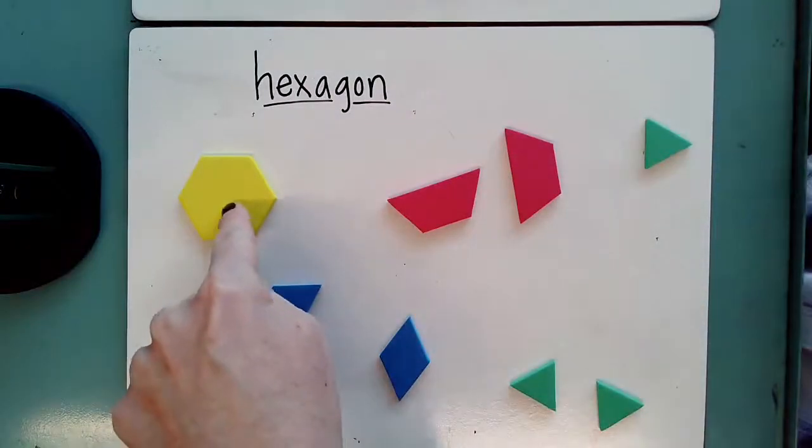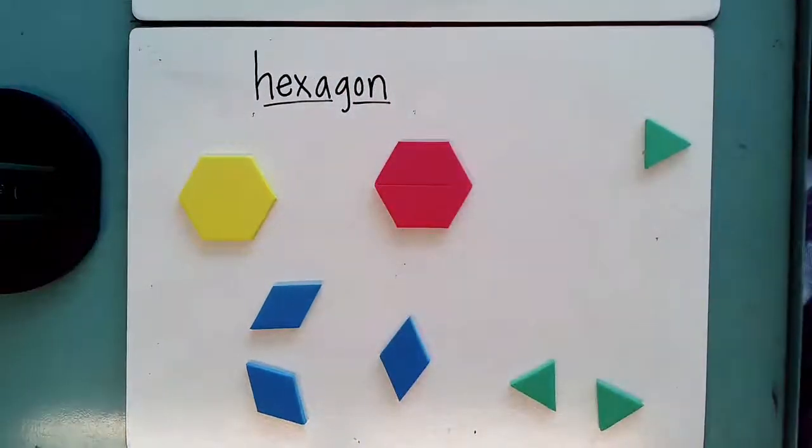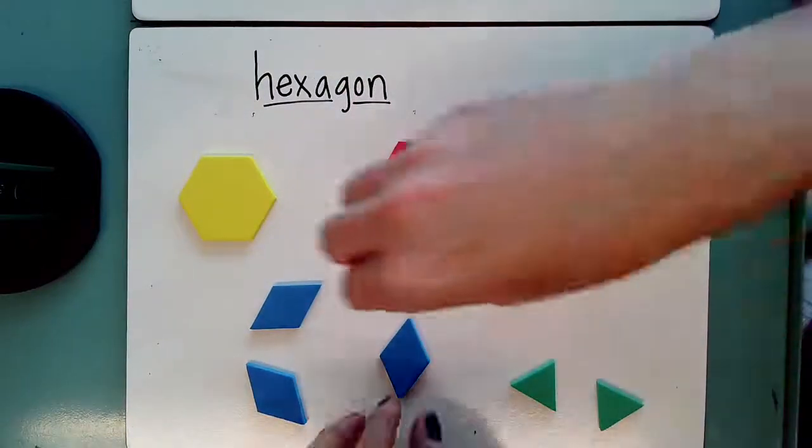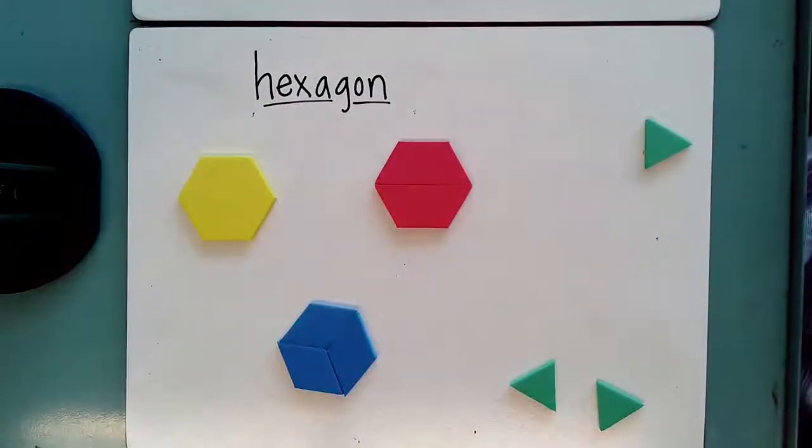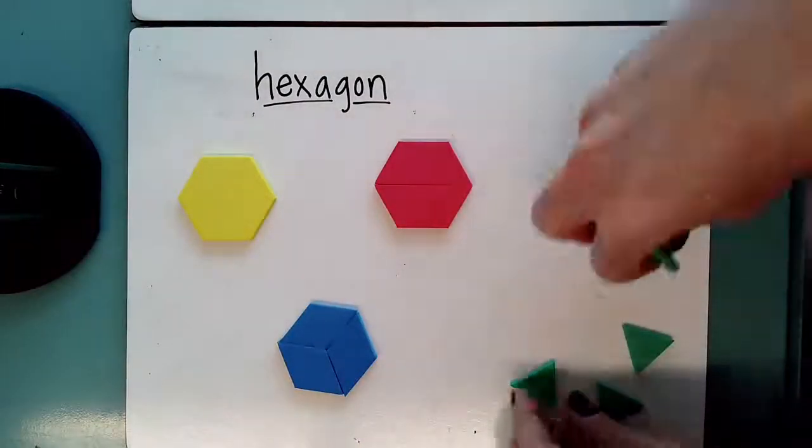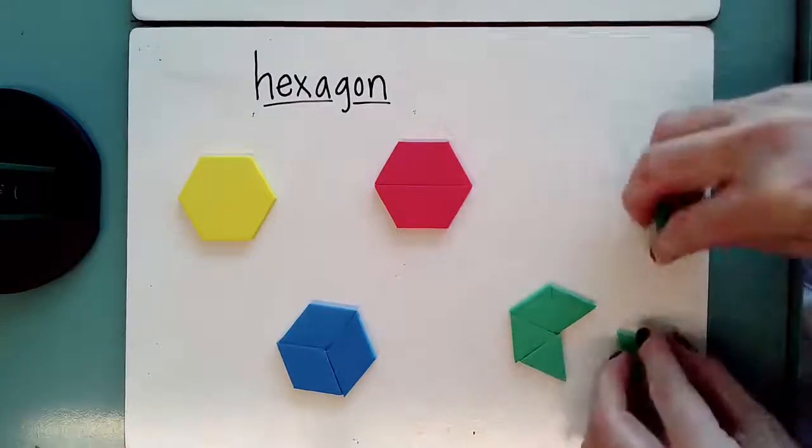So one way we can make this hexagon, I could put two trapezoids together, I could put three rhombuses together, and I can put six of these triangles together and it would make another hexagon.